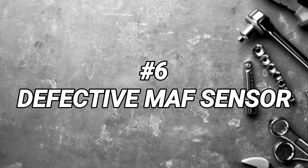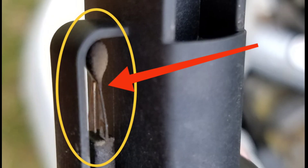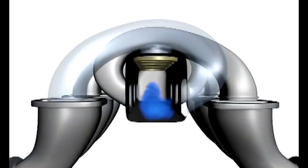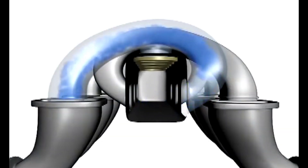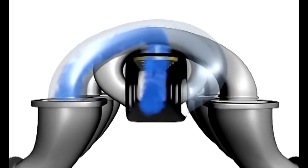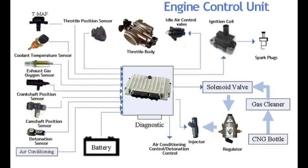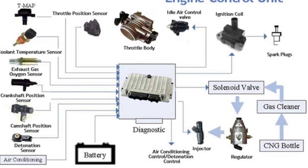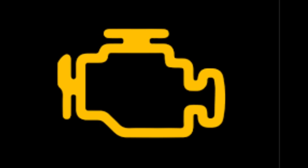Dirty or defective mass airflow sensor. A faulty or dirty mass airflow sensor can trigger the check engine light, because it is an essential component of the engine management system. The mass airflow sensor measures the amount of air entering the engine and sends that information to the engine control module to adjust the air and fuel mixture. If the mass airflow sensor is not functioning properly, it can send incorrect data to the ECM, causing the engine to run poorly and potentially causing damage to other components. This can trigger the check engine light to come on and generate an error code related to the mass airflow sensor.